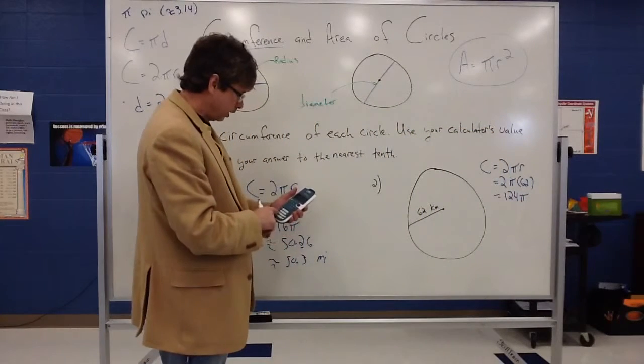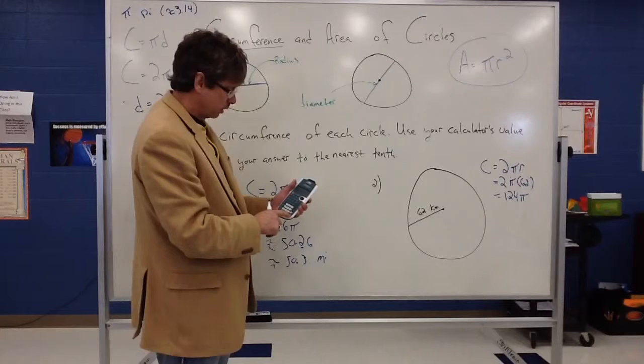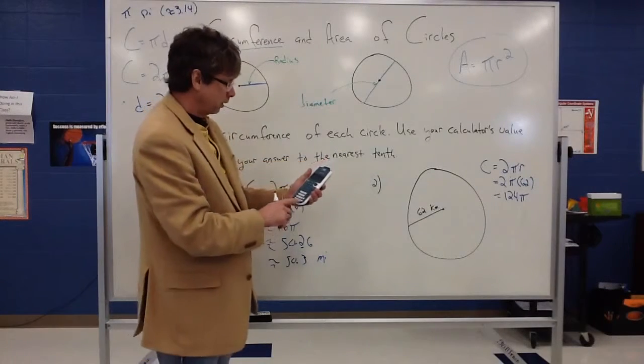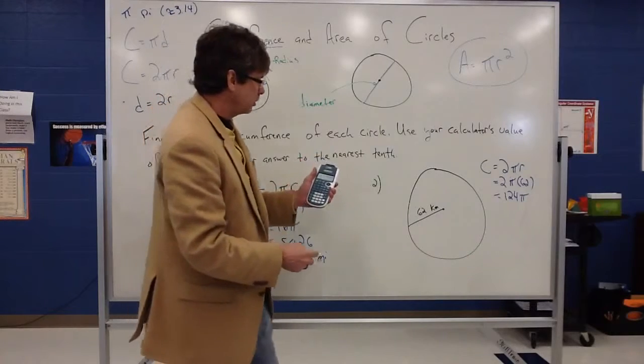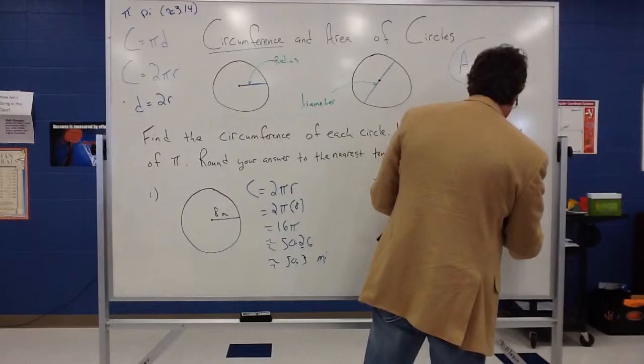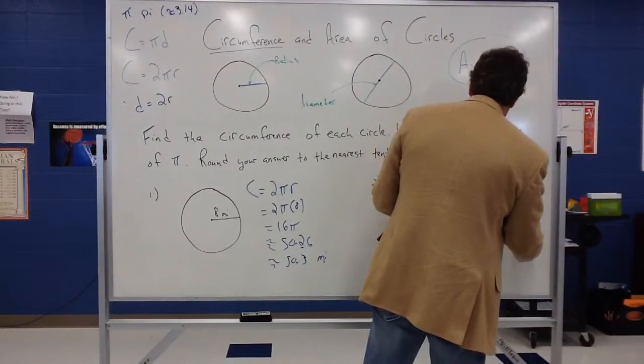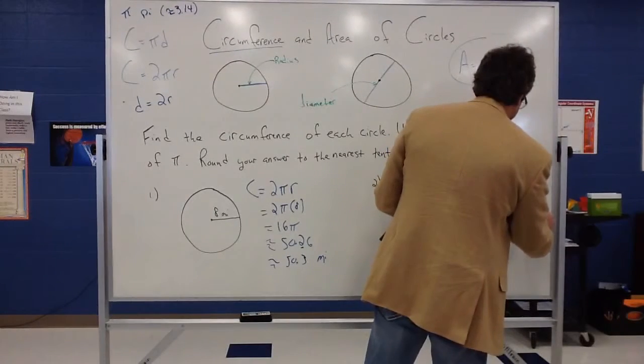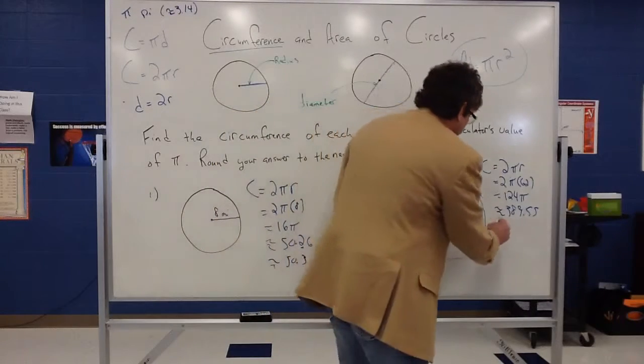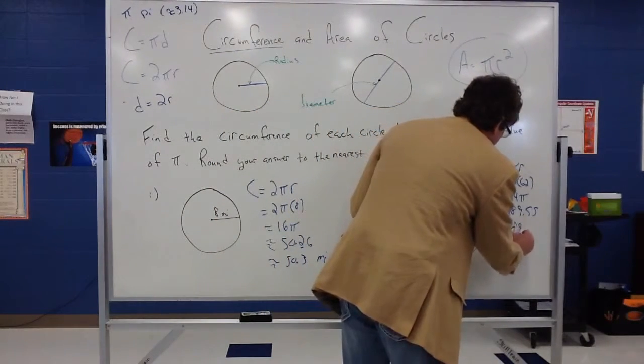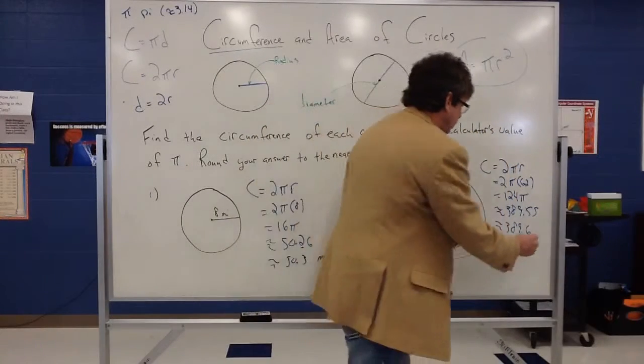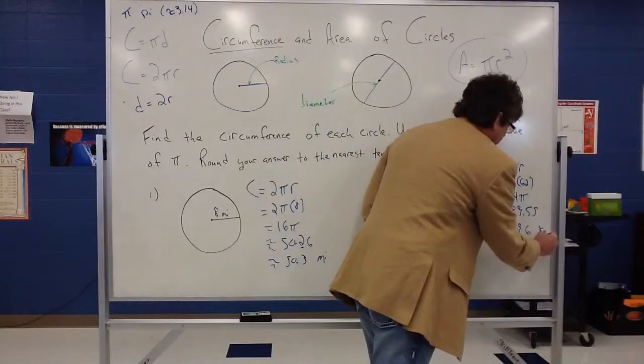And again, I've entered the 124 pi into the calculator. And since the directions say round to the nearest tenth, I hit that little toggle button again. It'll change it into a decimal notation for me. So it's going to be 389.55. And since it says round to the nearest tenth, that's going to be approximately 389.6. And since this is in kilometers, we would put our label of kilometers there.